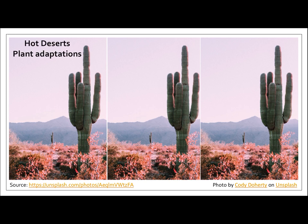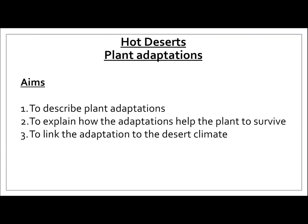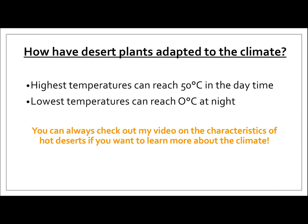Hey guys, welcome to this episode of Geography Stream. Today we're going to be learning about hot deserts and plant adaptations. There are three aims for the lesson. One, to be able to describe plant adaptations. Two, to explain how the adaptations help the plant to survive. And three, to link the adaptation to the desert climate.